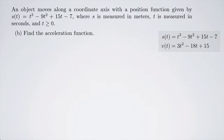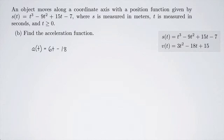Next, we have the acceleration function. I've put the position function and the velocity function on the side, and the acceleration function, which I will denote as a of t, is just the derivative of the velocity function. The derivative of 3t squared is 6t, and then we have minus 18. That's the acceleration function.